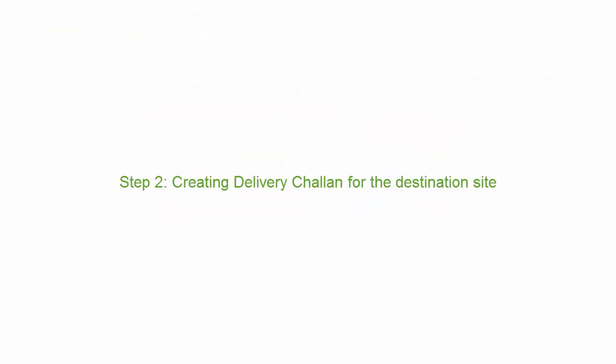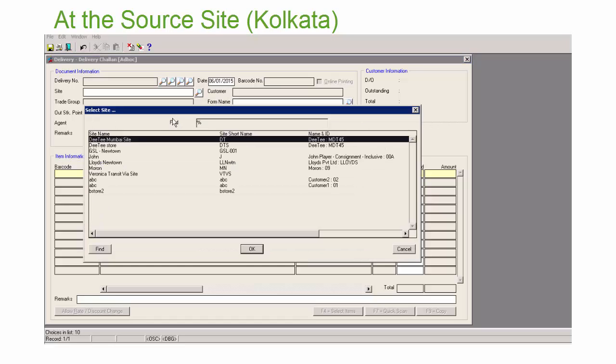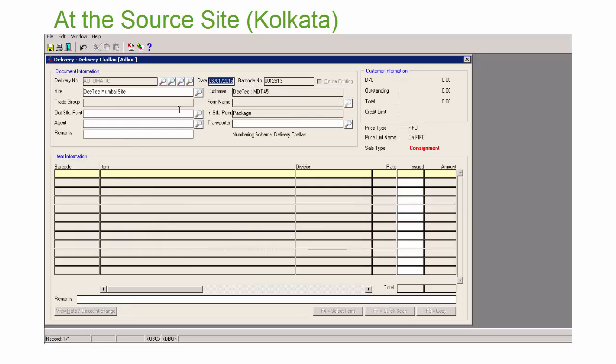The next step would be creating delivery chalans for the destination sites. Now that we have the transit via site set up, we create the delivery chalans to transfer the goods to the destination sites.